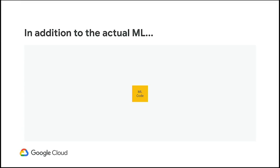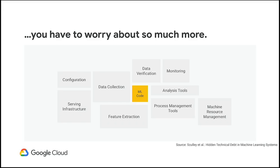Often, when we talk about building a machine learning application, we're talking about developing the core model. Model development happens with libraries like TensorFlow, PyTorch, scikit-learn, XGBoost, and so forth. We talk about developing the model and then deploying the model — yes, that is at the heart of it. But when you are building, deploying, and running a machine learning application in production, that entails many other stages.